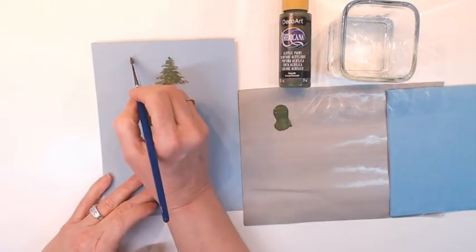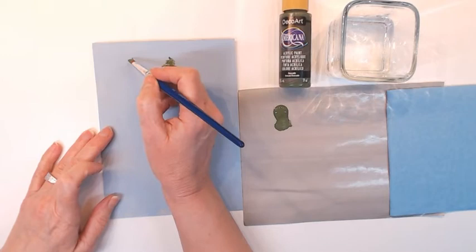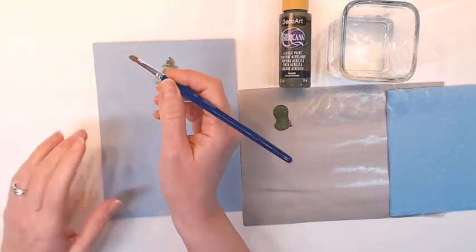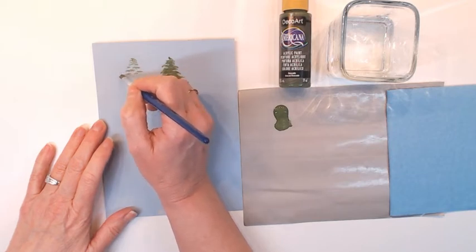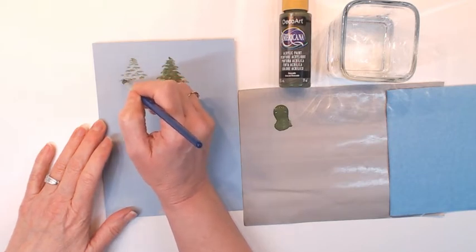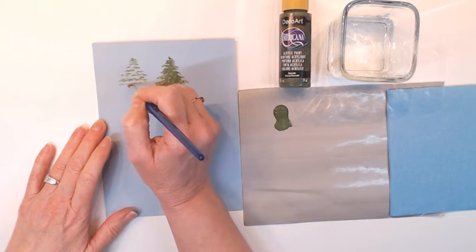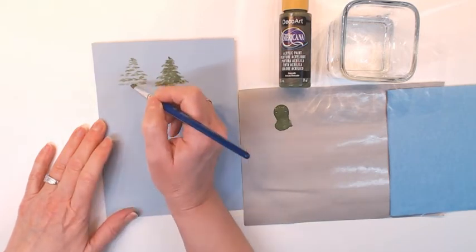I'm going to make a mark where I want to start my tree and then using that chisel edge I'm just going to start tapping in a back-and-forth motion, going down, making my marks bigger and bigger as I go down for the size of tree that I would like to have.